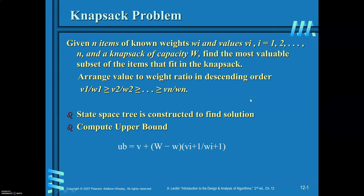In this video, I will explain how you can find a solution for the knapsack problem by applying the branch and bound design technique. The problem statement is: given N items of known weights W_i and values V_i, where i ranges from 1 to N, and a sack of capacity W, you are required to find the most valuable subset of items that fit into the knapsack. The total weight of items filled into the sack should not exceed the capacity of the sack, and the value must be maximized.